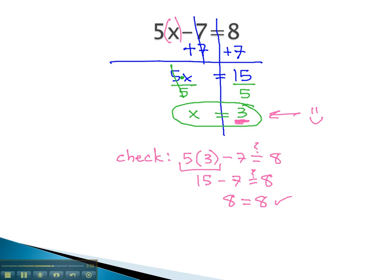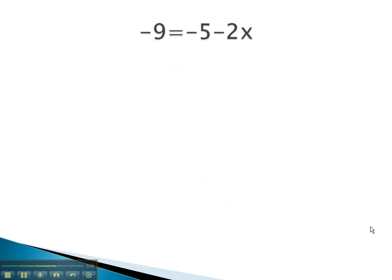Add and subtract first, multiply and divide second. Let's try one more example. In this problem, we have negative 9 is equal to negative 5 minus 2x. If we balance through the equals sign, we want to take care of the positives and negatives first.